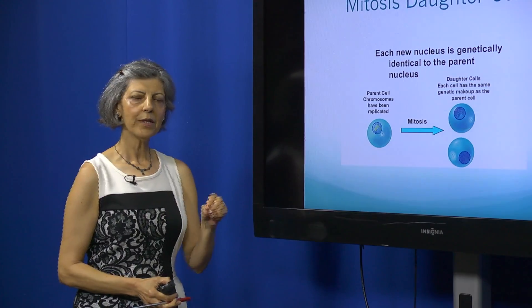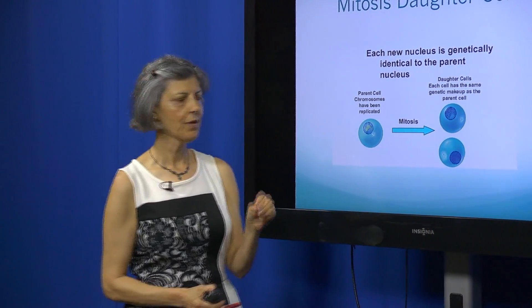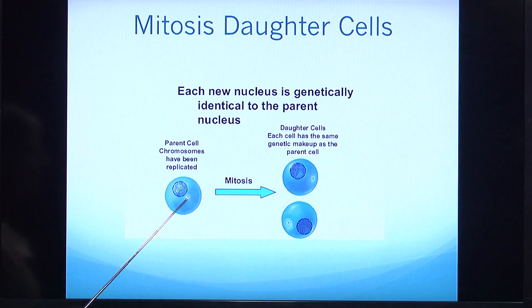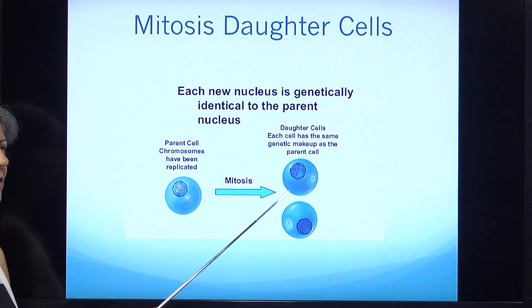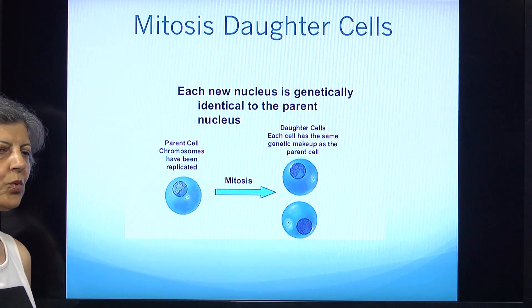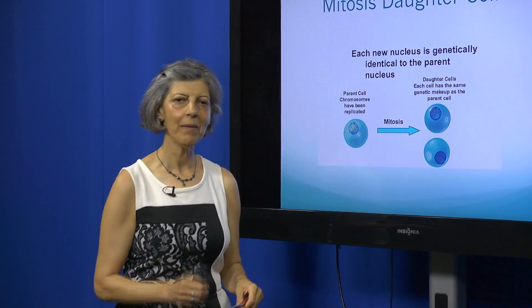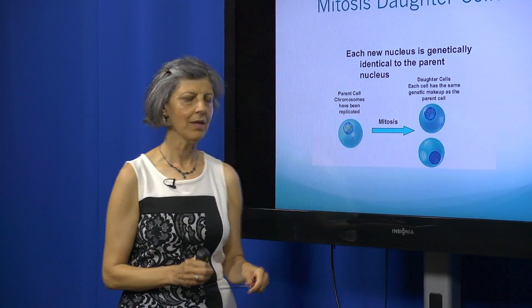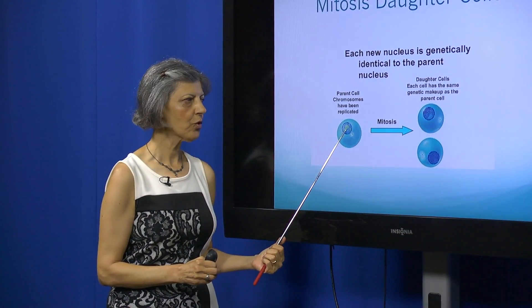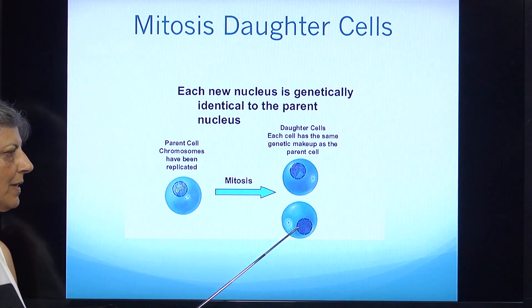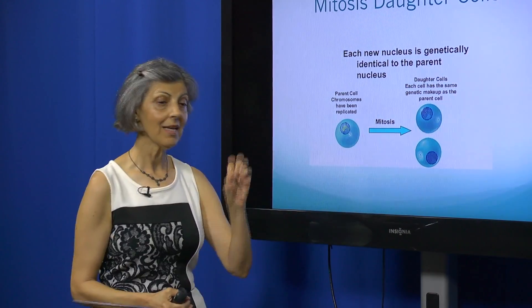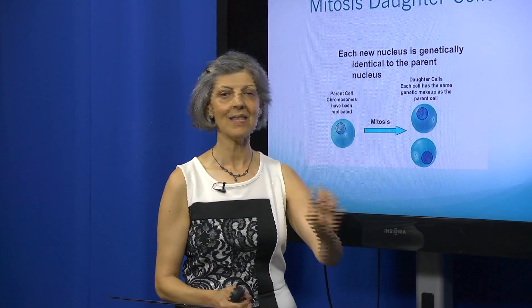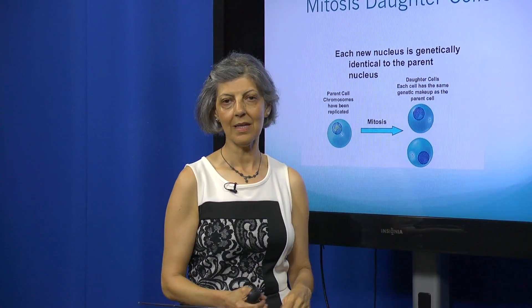A very important concept to remember in mitosis: we start with a parent cell that divides through those four stages to form two new daughter cells. These two daughter cells are identical to the parent cell in every aspect. If I have 46 chromosomes in the parent, each daughter cell will also have 46 chromosomes. A liver cell makes two more liver cells; a bone cell makes two bone cells.